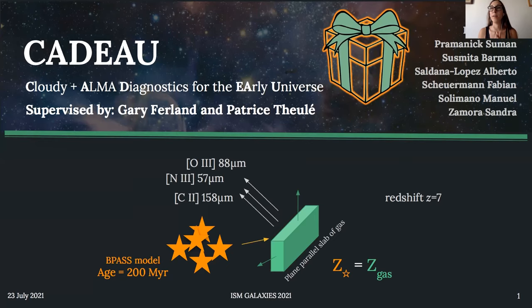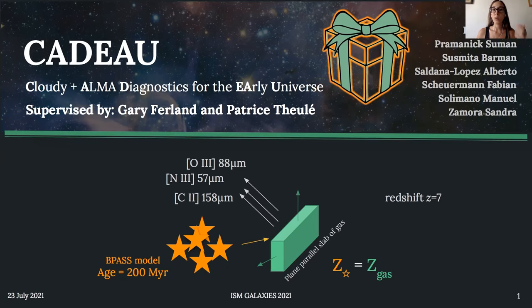We considered a redshift-7 environment and used BPAS stellar models to simulate a 200 million year old stellar population. We then used Cloudy to derive the luminosities of different far-infrared lines — for instance, ionized hydrogen, oxygen, nitrogen, and carbon.